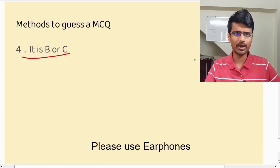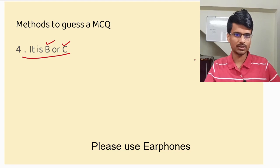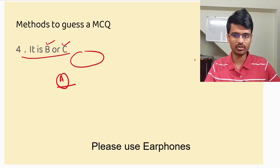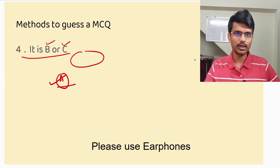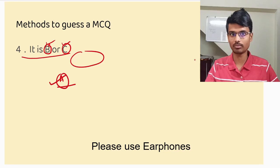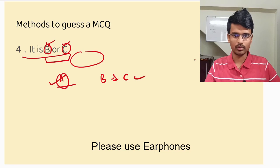The fourth method: if you have applied all the previous methods and nothing is working, go for either B or C. Think from the examiner's point of view — the person setting the question paper does not want option A to be correct, because as soon as you read the first option you might just tick it. He wants to make it a little tougher, so he will try to keep the correct answer in option B or C. This is what we can make out from the examiner's perspective.